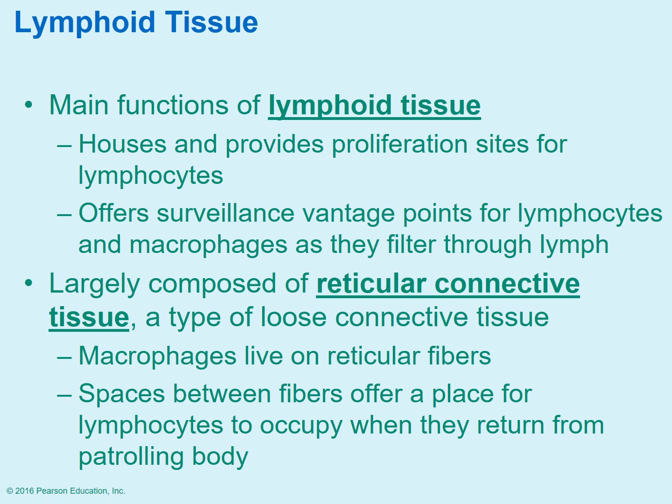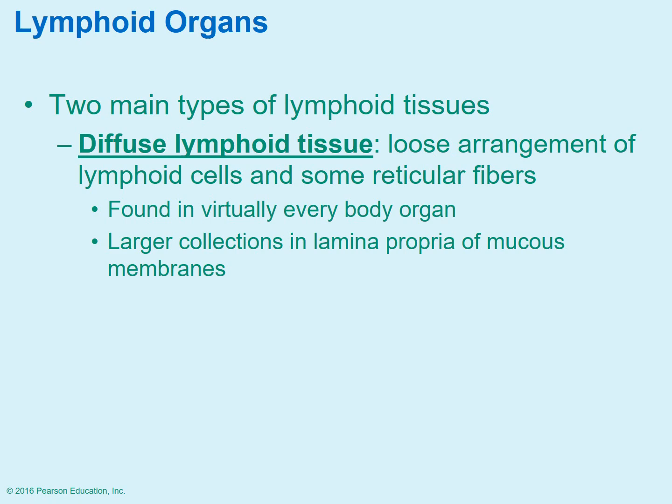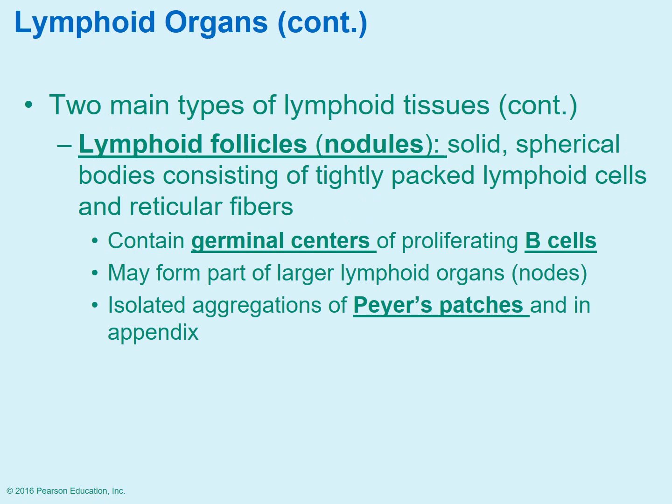The function of lymphoid tissue is to provide a place to store and house those lymphocytes, allow a place for them to multiply, and act as surveillance. As the lymph moves through, it acts as a filter. Diffuse lymphoid tissue is a loose arrangement of lymphoid cells and fibers found throughout the entire body, with higher concentrations at certain membranes. Lymphoid follicles or nodules are areas of very tightly compacted lymphoid cells. Some of these aggregate into what are known as Peyer's patches, associated with the small intestines.